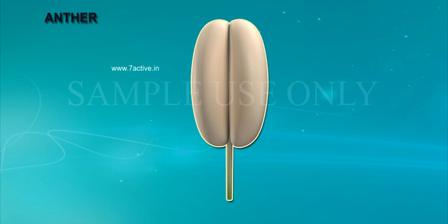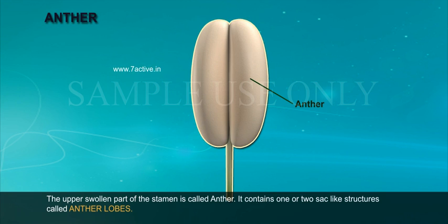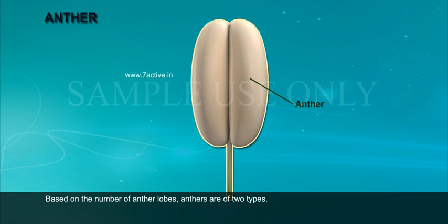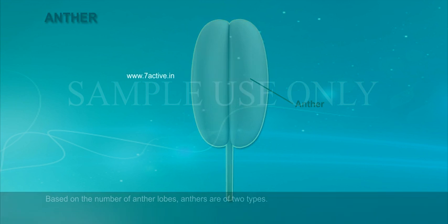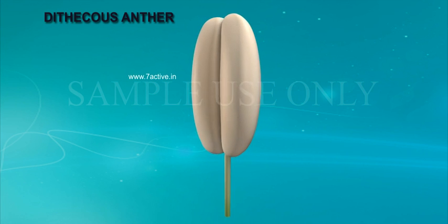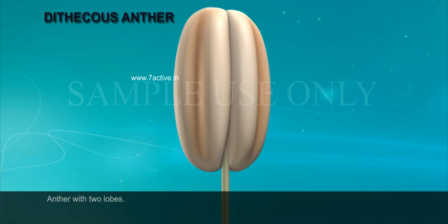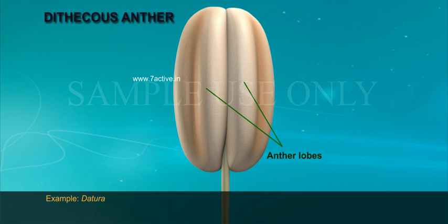The anther contains one or two sac-like structures called anther lobes. Based on the number of anther lobes, anthers are of two types. Dithecous anther: An anther with two lobes. Example: Datura.